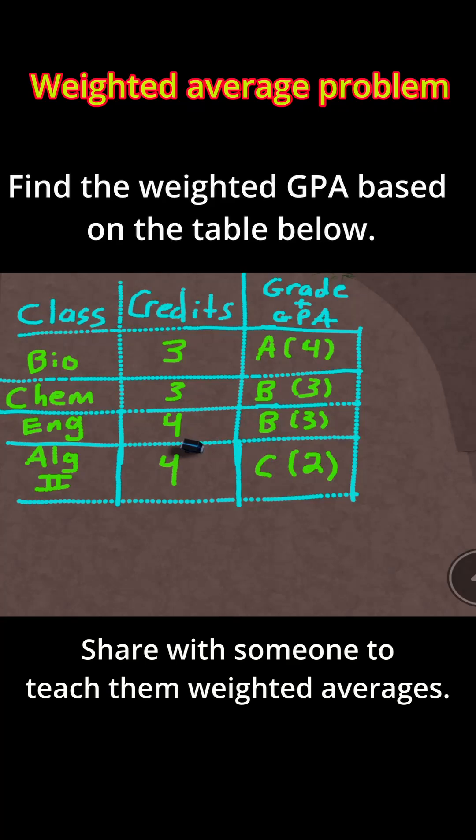In this problem, it says find the weighted GPA based on the table below. Here in this table, it says that a student took these four classes: Bio, Chemistry, English, and Algebra 2.